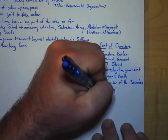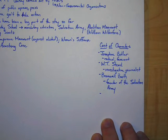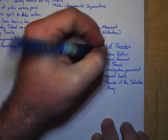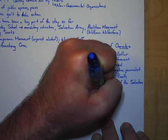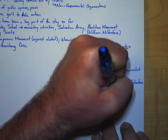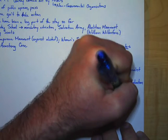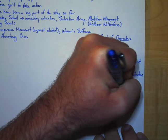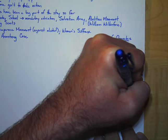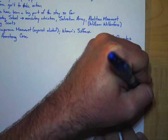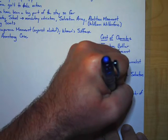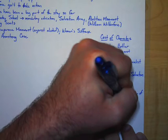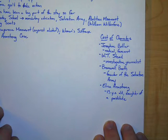And the last person that we need to know is Eliza Armstrong. Eliza Armstrong is a 13-year-old girl and the daughter of a prostitute. So these are the people that are involved in this story.